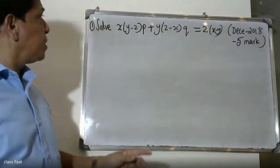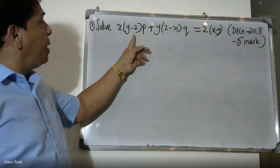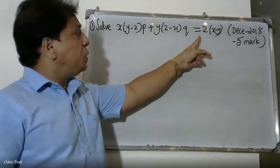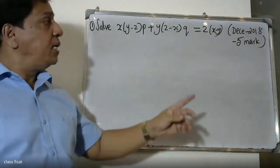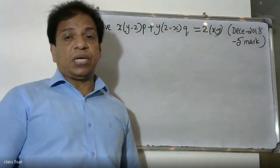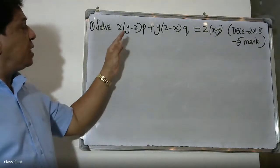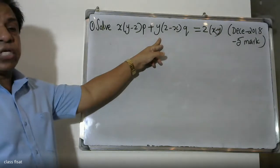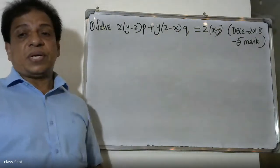Good morning students. Today's question: x(y-z)P + y(z-x)Q = z(x-y). We need to find the answer for this problem. The equation is x(y-z)P + y(z-x)Q = z(x-y).